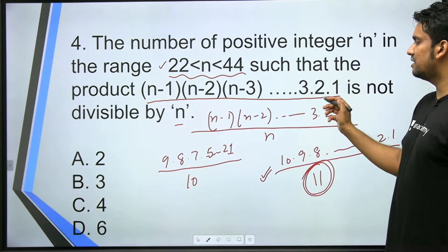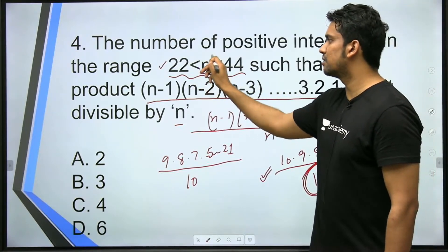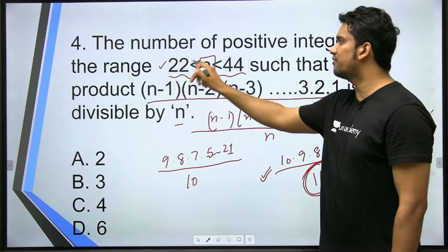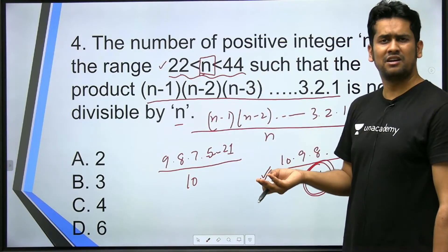Is this number divisible by 11? No, because in this number there's no multiple of 11. So when is this possible? Because this is a prime number. So our condition will be met whenever n is a prime number. So you don't have to do anything, just count the prime numbers in the range 22 to 44.